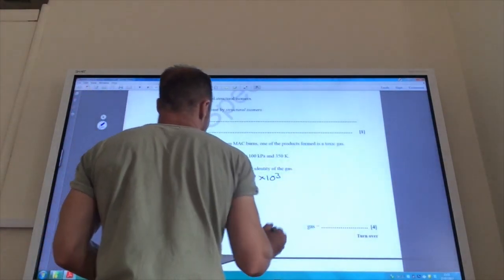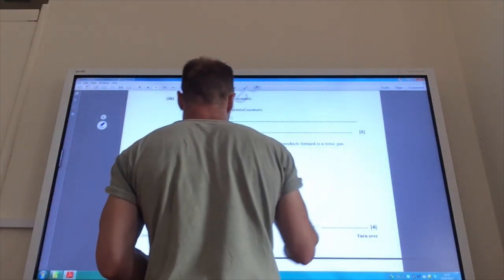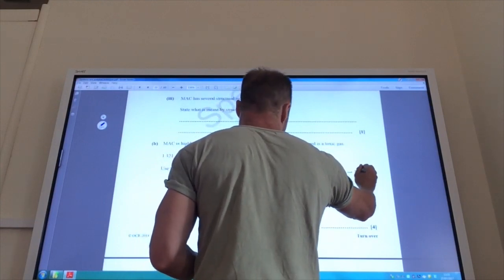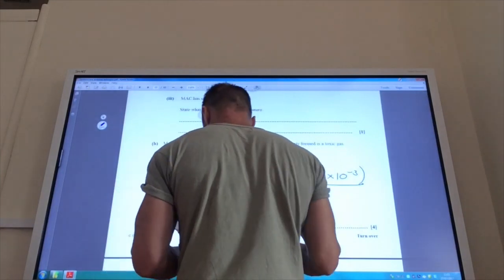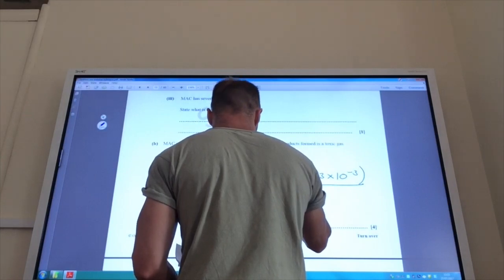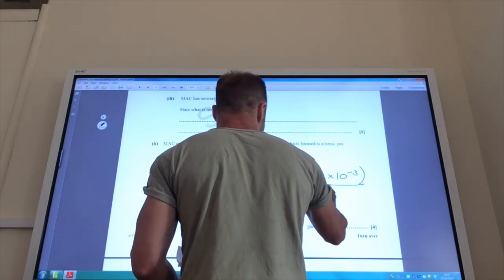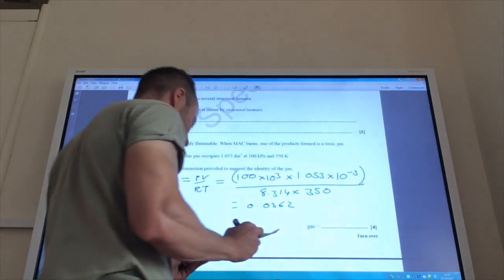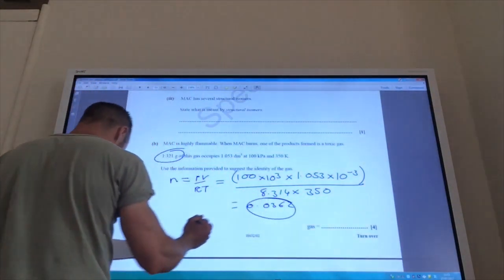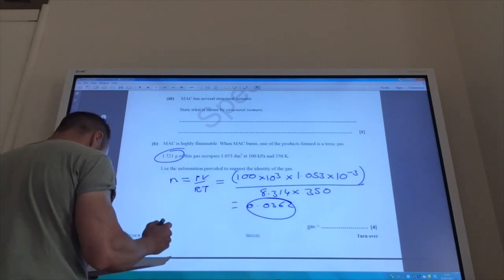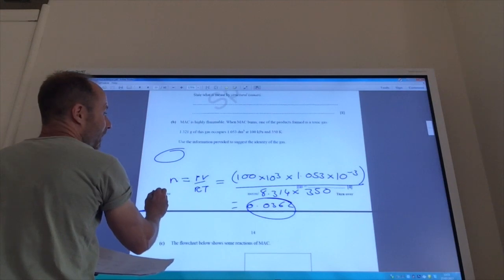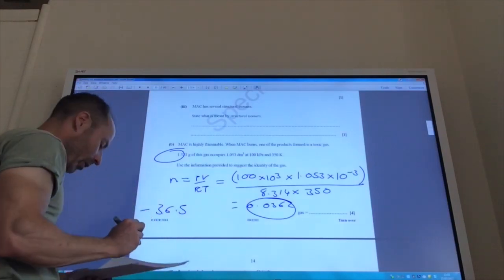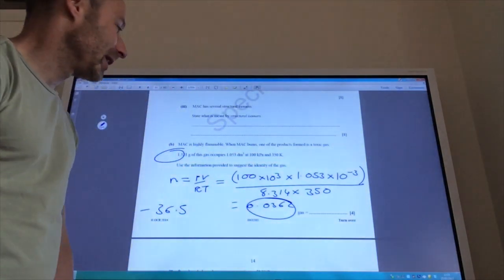You've got 100 times 10 to the 3 for your pressure, because you need to convert that into Pascals. Your volume, you need to convert into meters, so that's times 10 to the minus 3. Do all of that. And then you've got 8.314 for RT. Your temperature, they've given to you already in Kelvin. You do that, that comes to 0.0362 mole. And then you divide that number by that number, because MR equals mass over moles, and that comes to 36.5 grams per mole, which looks like it's going to be HCl. So, the answer is HCl.